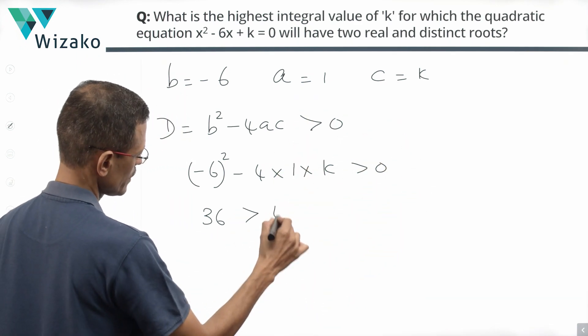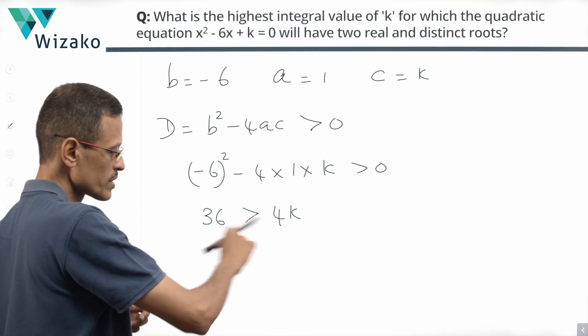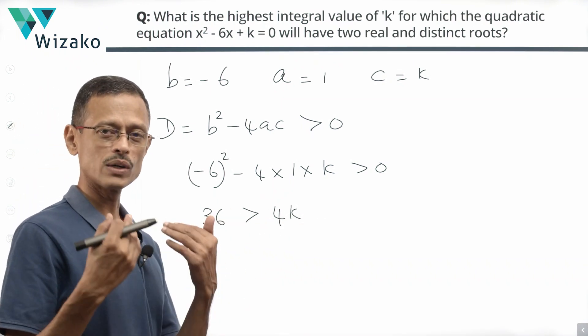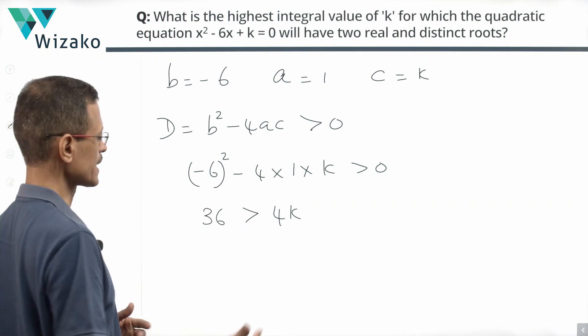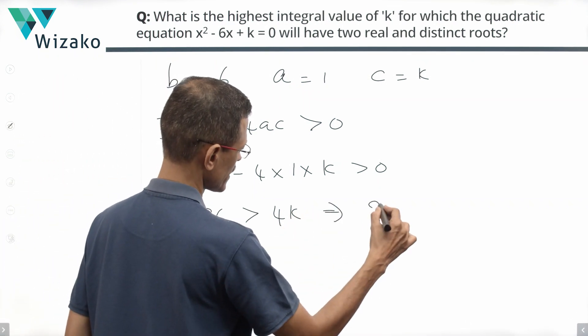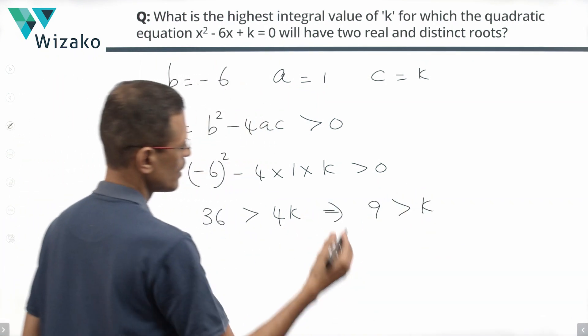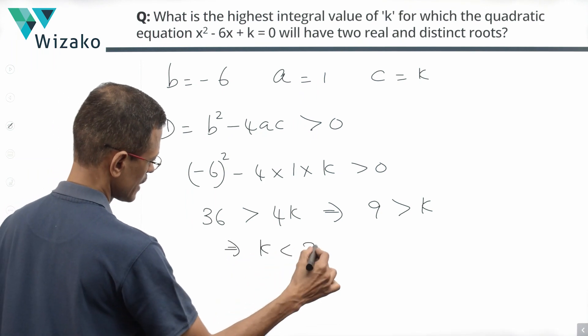Let's take it to the right hand side. So, 36 is greater than 4k. Divide both sides of the inequality by 4. 4 is a positive number. So, the inequality stays intact in terms of its sign. It does not switch. Translating to the fact that 9 is greater than k or essentially we are stating that k is less than 9.